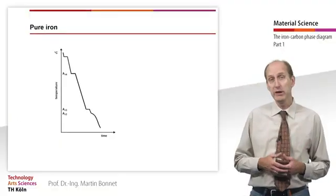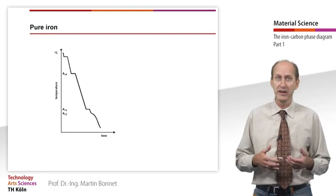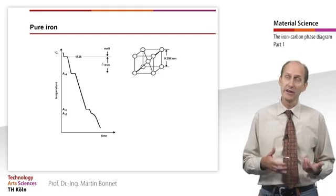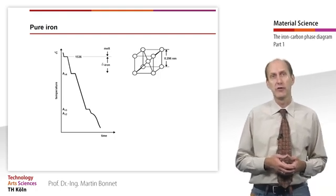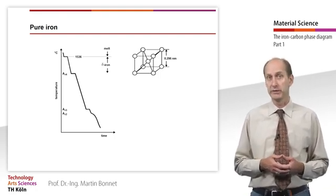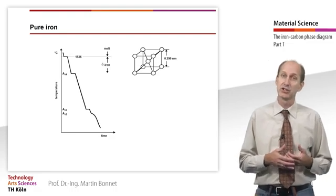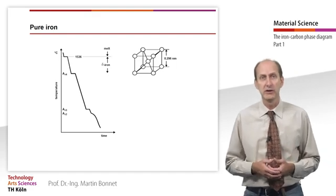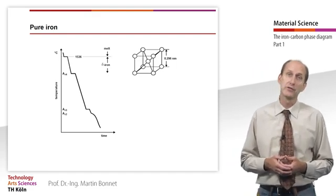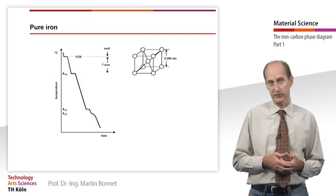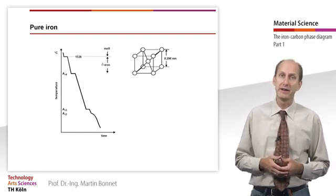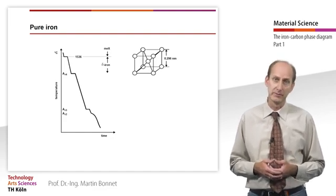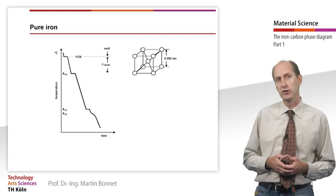Iron is one of the few polymorphous metals, meaning it exists in different types of crystals. Unlike most other metals, the cooling curve of pure iron obtained by thermal analysis does not show one but three arrest points. Pure iron solidifies at 1536 degrees Celsius, forming crystals with a body-centered cubic lattice, the so-called delta iron. Here the first arrest point occurs.